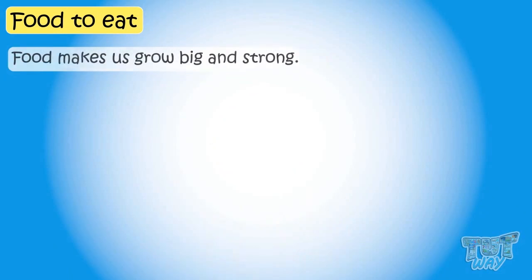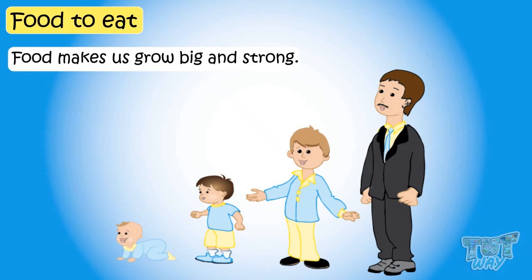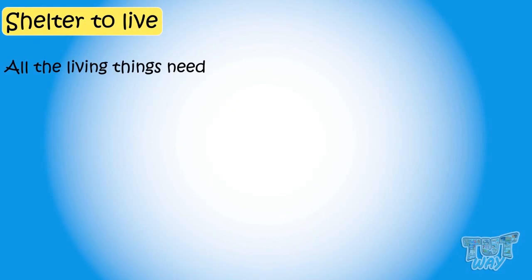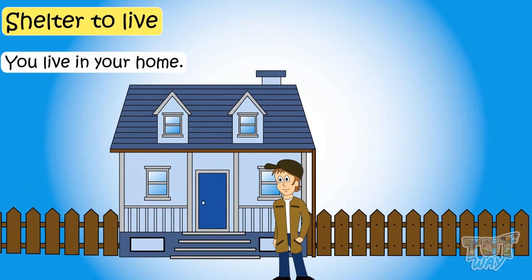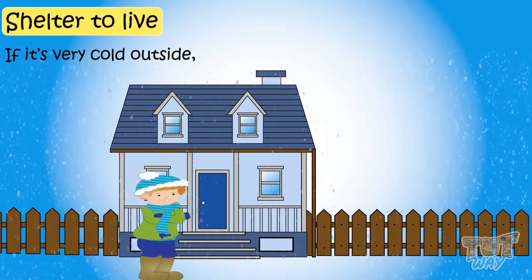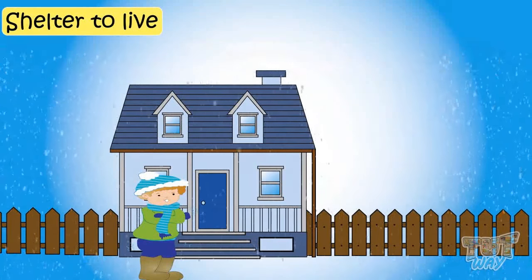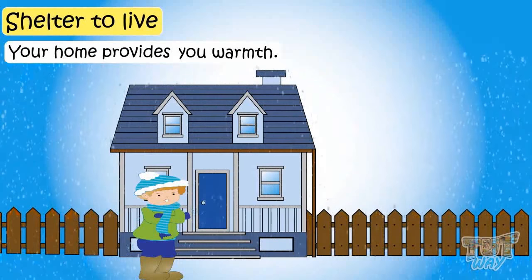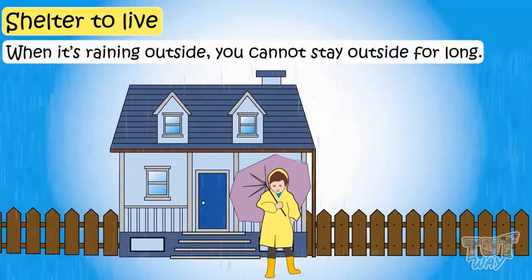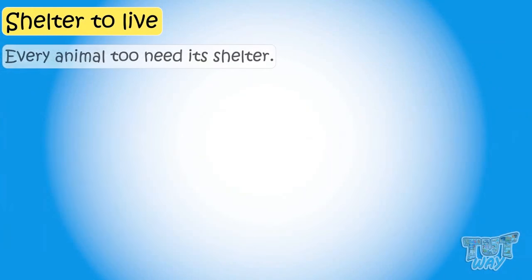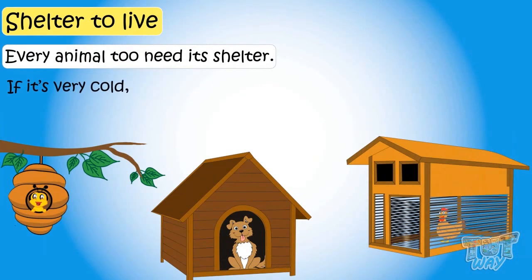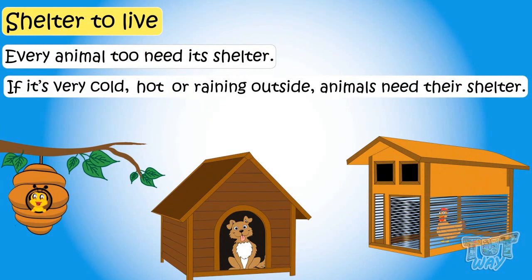Food also makes us grow big and strong. Now let's learn about another basic need — shelter to live. All living things need their home or shelter. Where do you live? You live in your home — that's your shelter. If it's very cold outside you cannot survive for long, as you need warmth provided by your home. When it's raining outside you cannot stand outside for long — you need your shelter. Every animal too needs a shelter when it's very cold, hot, or raining outside.